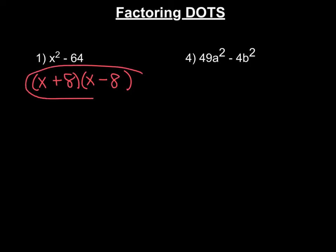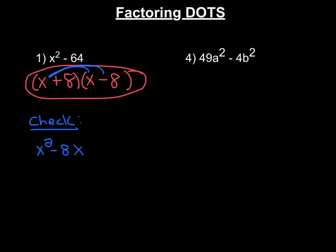This right here is x squared minus 64 in factored form. If you wanted to check, it's really easy — all you have to do is multiply out your answer by double distributing. So x times x is x squared, x times negative 8 is negative 8x, positive 8 times x is positive 8x, and 8 times negative 8 is negative 64. These two middle terms cancel, and we're left with the original expression. So that checks out.